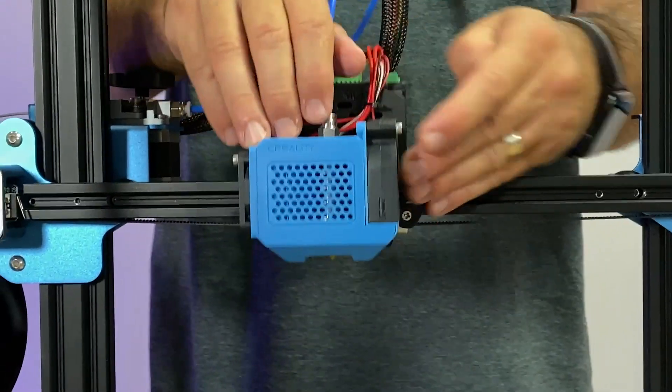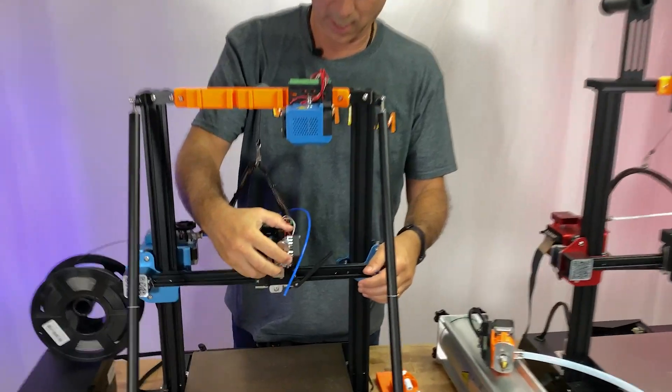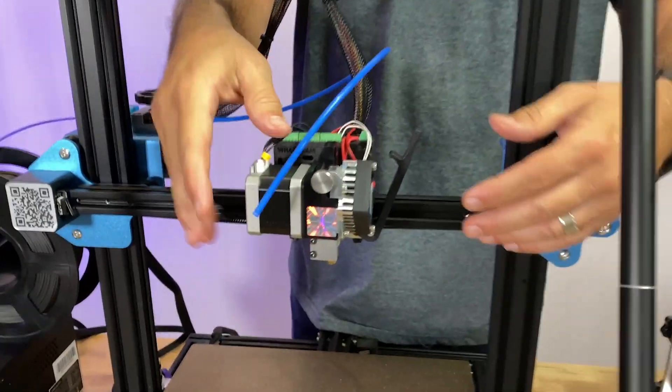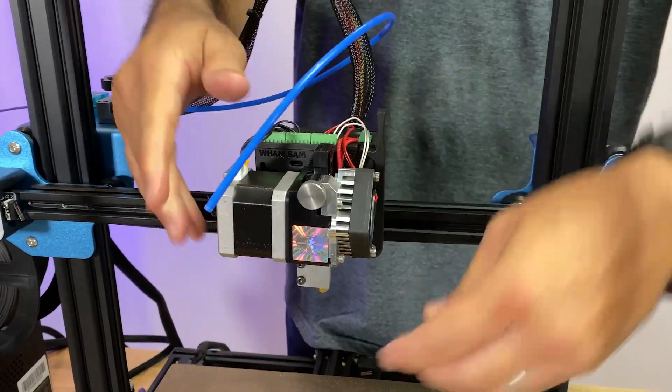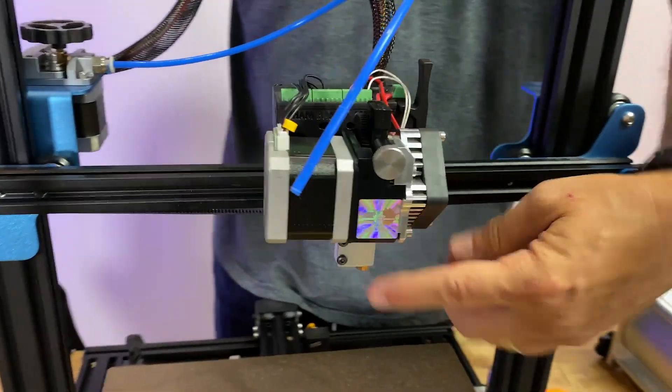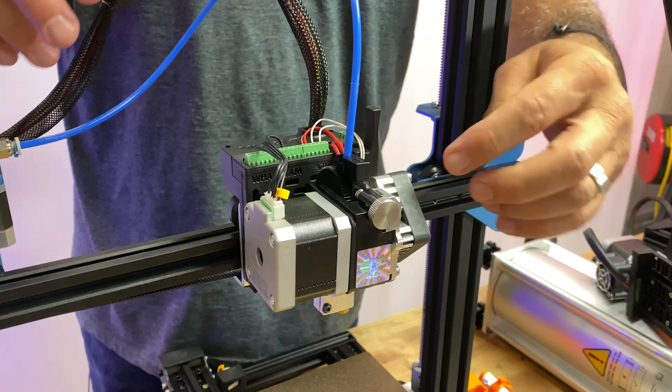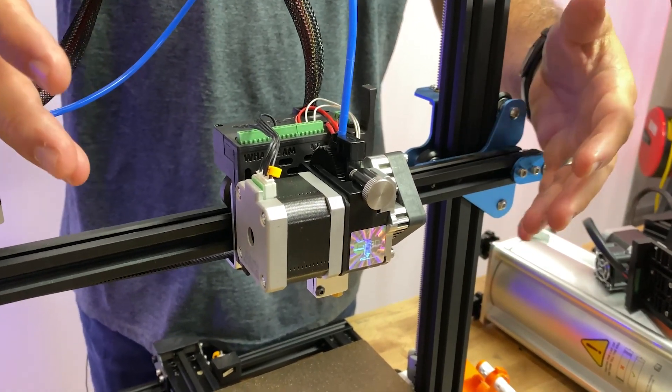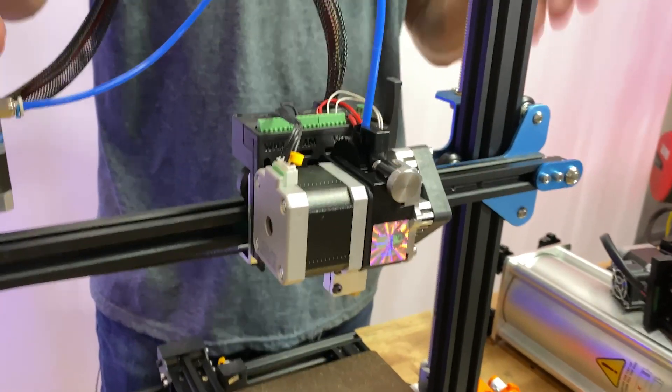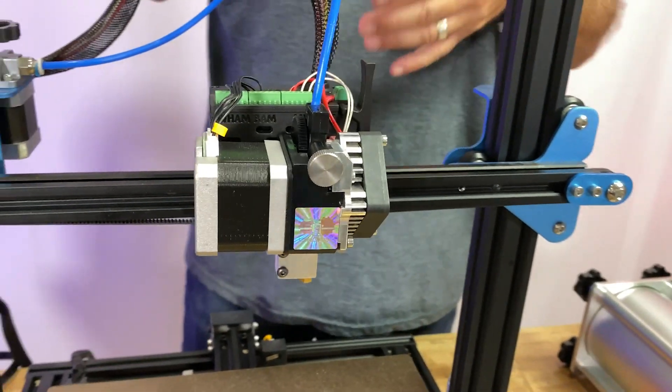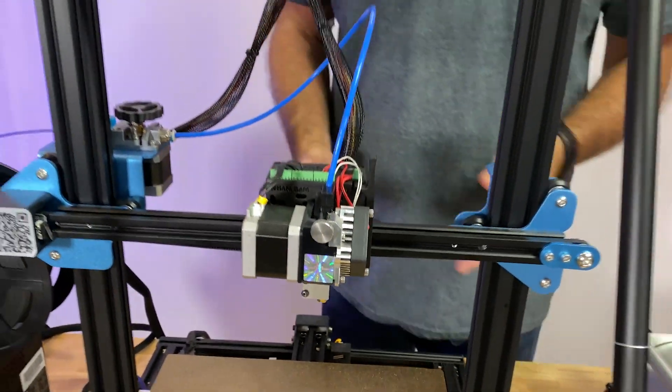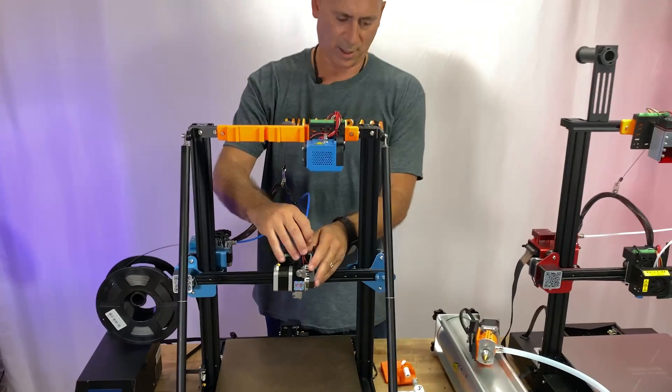I could just swap out and put on a setup, in this case it's an E3D with a Volcano hot end and a 1.0 nozzle, and just by swapping that out I can all of a sudden print very large things really quickly, and it didn't take me more than three seconds to change it out, and it doesn't end there.